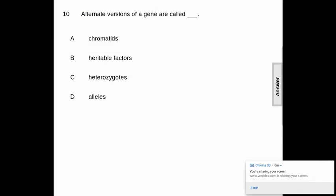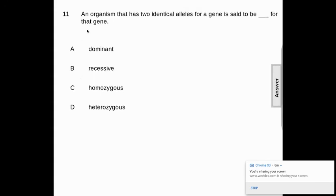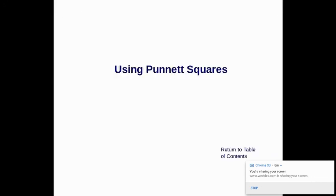All right, let's go over the answers. I'll read them all. Alternate versions of a gene are called chromatodes, heritable factors, heterozygotes, or alleles. The answer is D, alleles. An organism that has two identical alleles for a gene is said to be blank for that gene. Two of the same. Which word means two of the same? Is it dominant, recessive, homozygous, or heterozygous? The answer is homozygous. Remember, same.